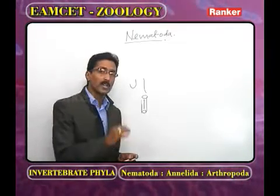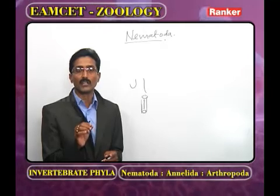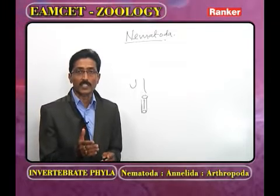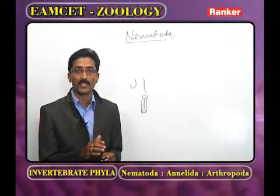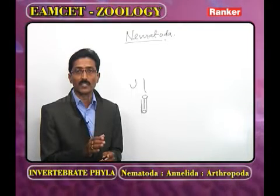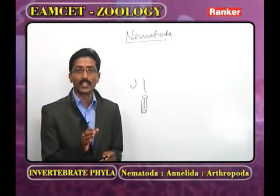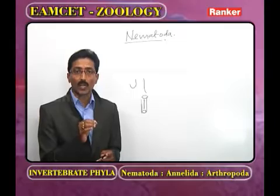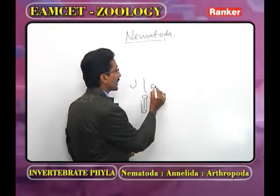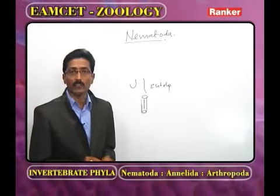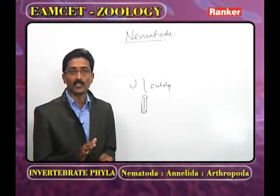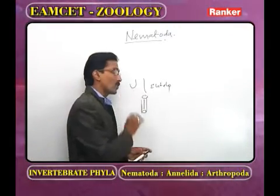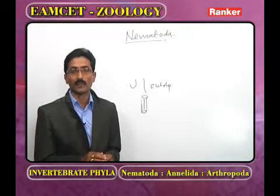Another important character of Nematoda is that the tissues are cellular or syncytial, characterized by a species-specific number of cells or nuclei. Each species has a specific number of cells and nuclei. The reason for this is eutely — in the adult stage, somatic cells do not undergo any division; only the germ cells can undergo division.